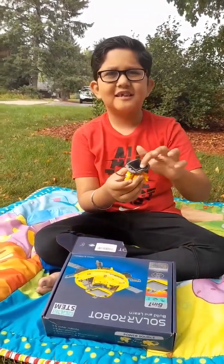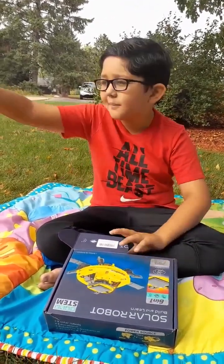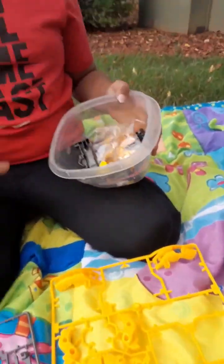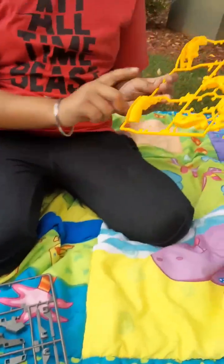You see this? This is called a solar panel. It uses the power of the sun. This kit comes with mechanical parts, plastic board A, plastic board B, and it also comes with stickers.